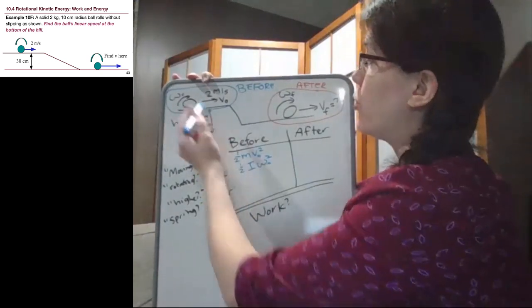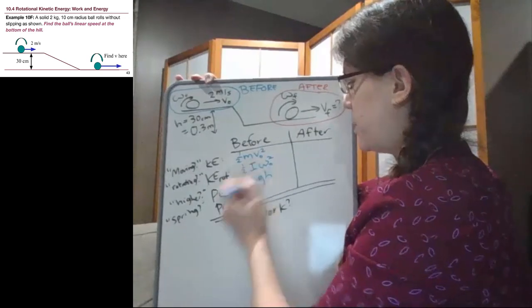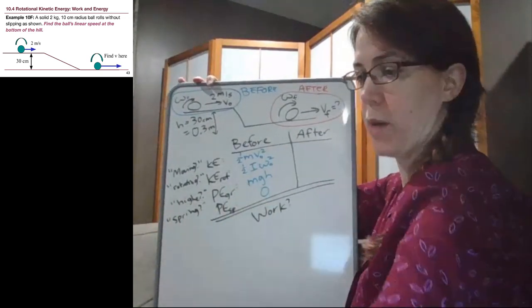Are we higher at the start of the problem? We are. We're at the top of a hill, so mgh. And is there a spring? There's no spring at the beginning of the problem.